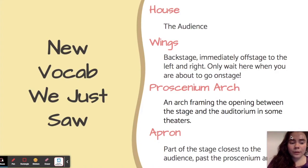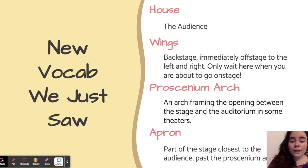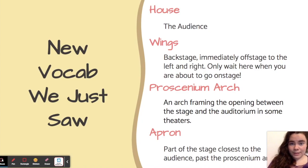Here's some new vocab that we just saw. The house is where the audience sits. The wings are backstage, immediately off stage to the left and the right — you only wait here when you're about to go on stage, or you could be in someone's way. The proscenium arch is the arch framing the opening between the stage and the auditorium, right where the curtain is. And the apron is the part of the stage closest to the audience.